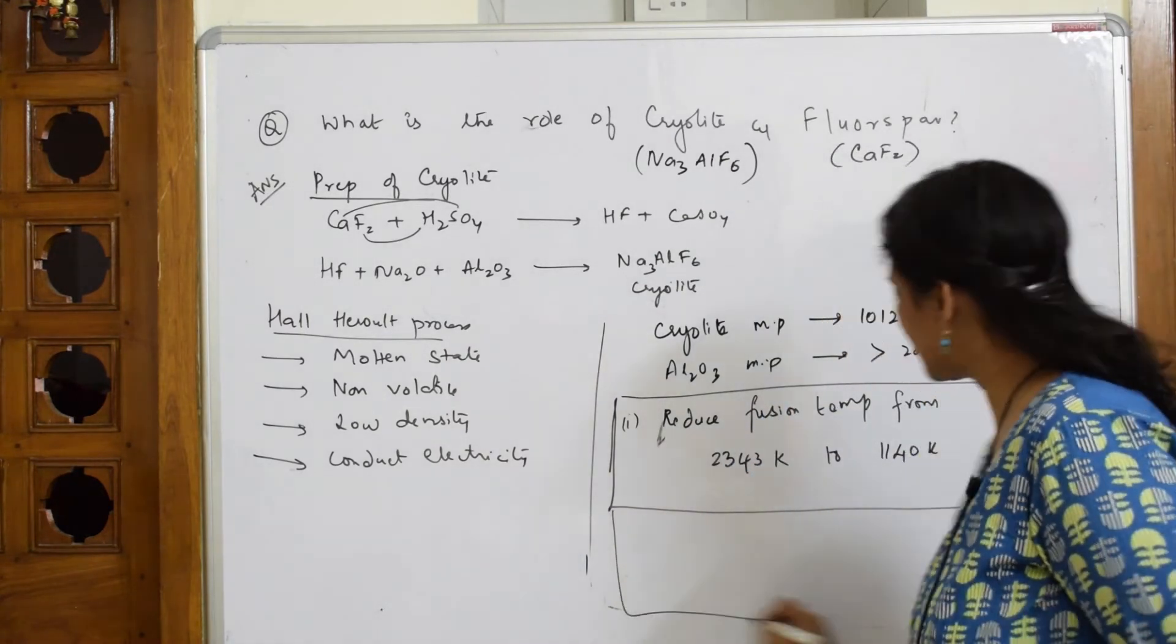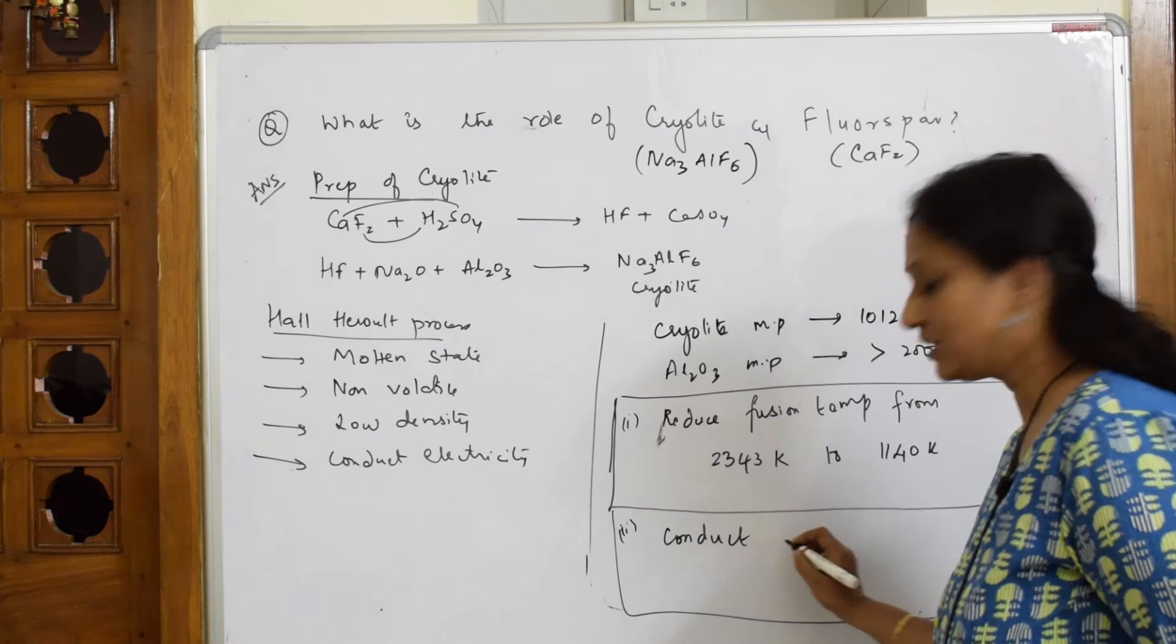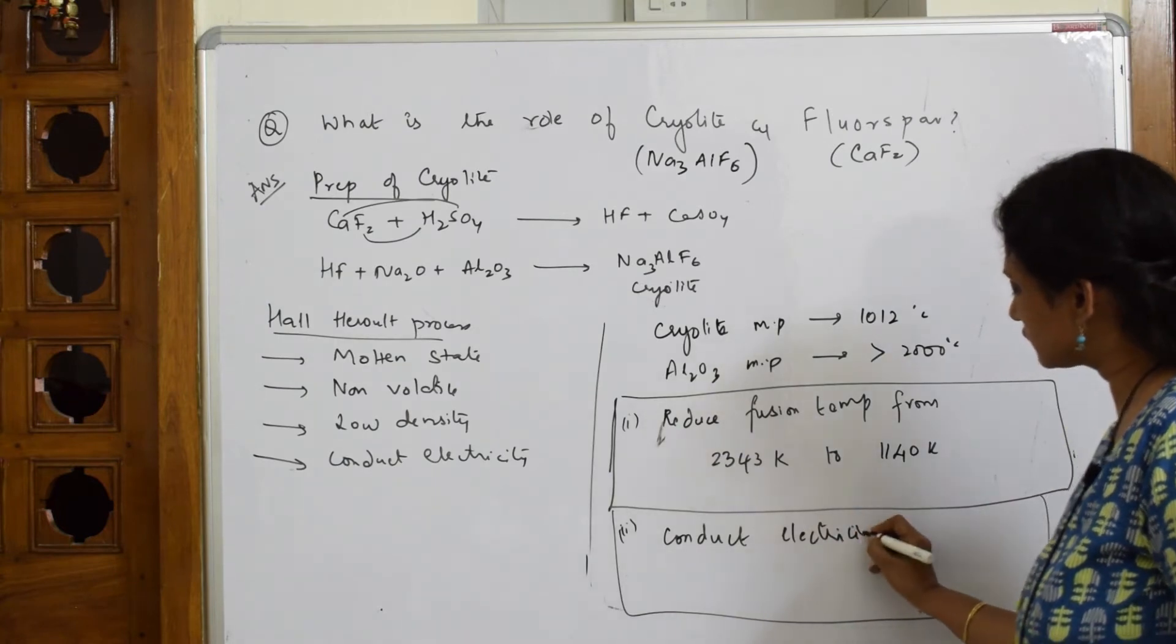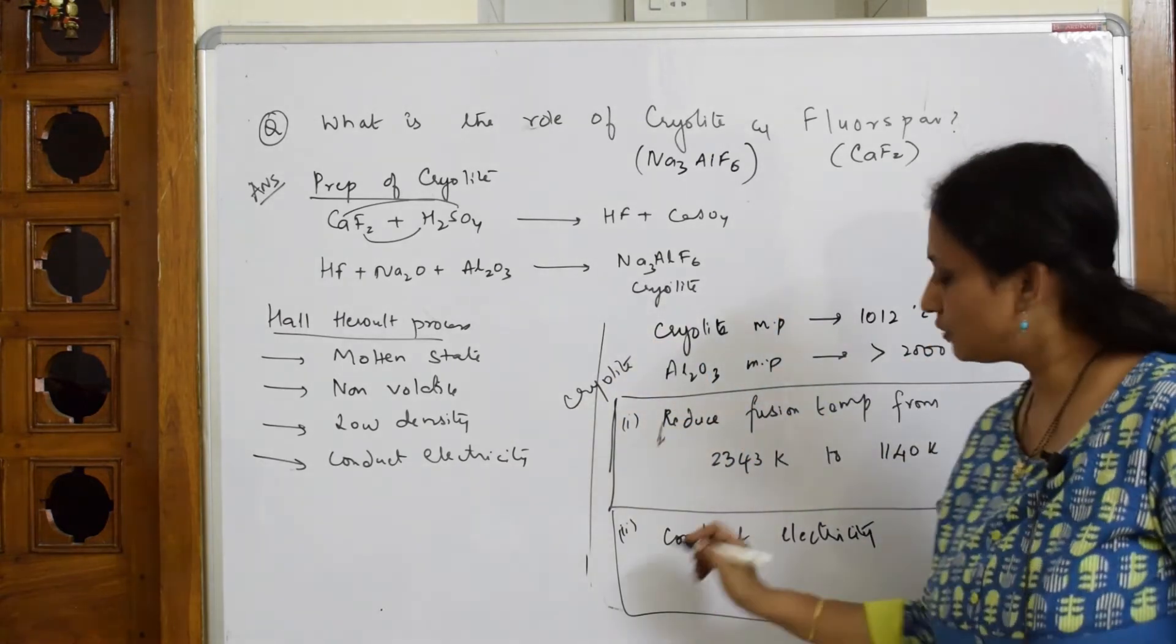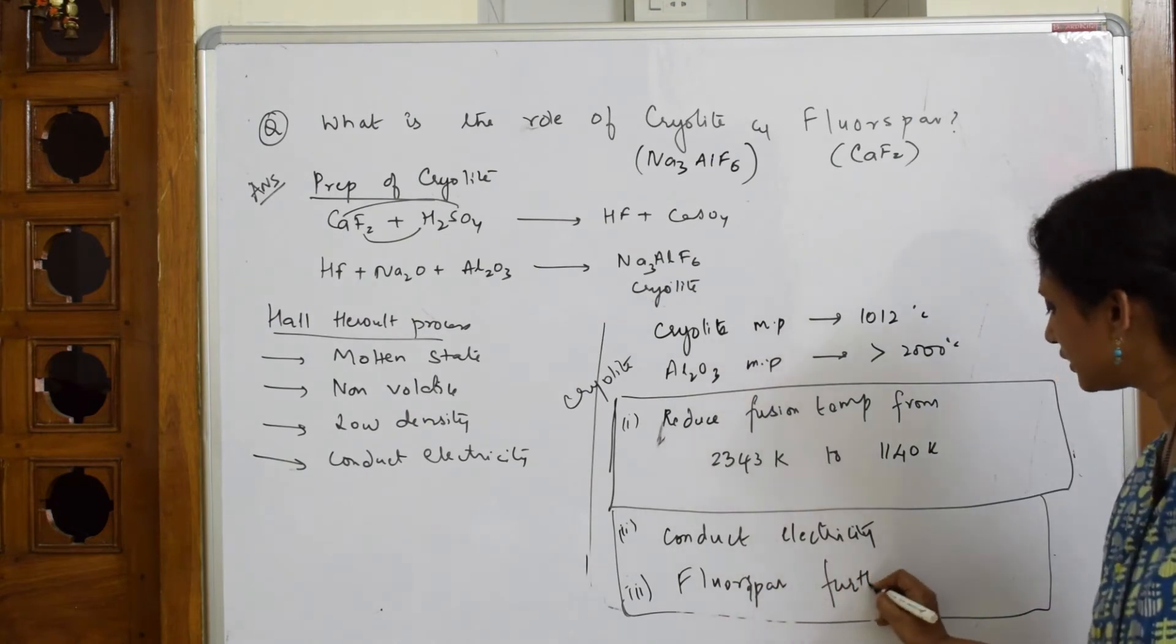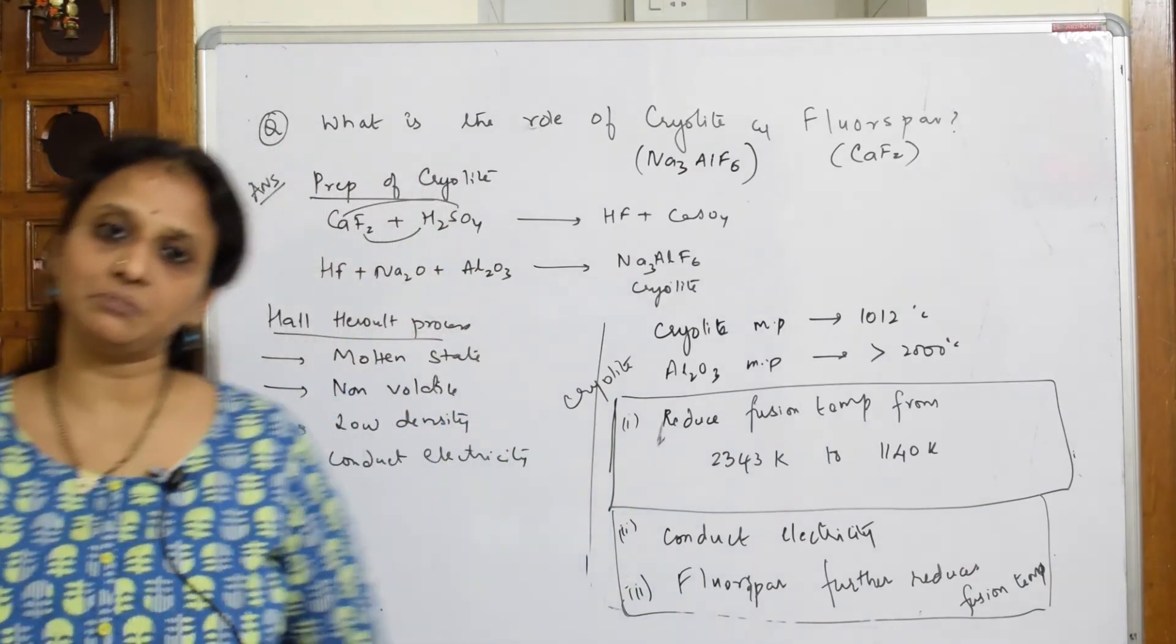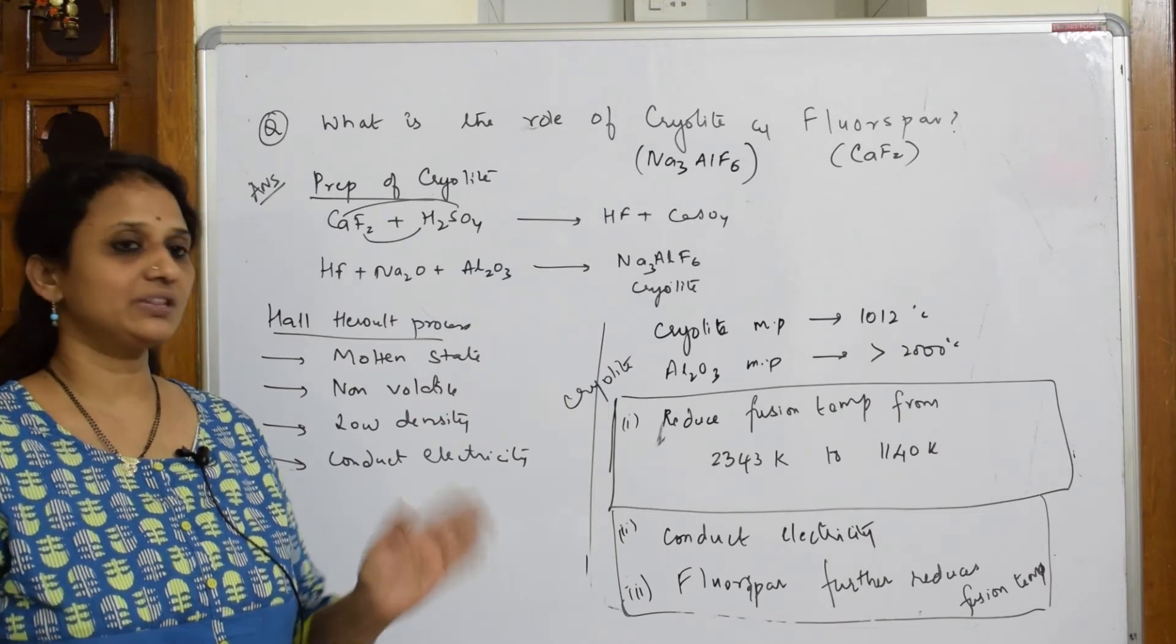The next important thing cryolite is going to help, it will conduct electricity. We have already seen the cell reactions in Hall-Heroult process. So it conducts electricity. This is also one of the important functions of cryolite. Now, what is the use of fluorspar? Fluorspar also further reduces the fusion temperature. These are the two important applications: reducing the fusion temperature so that the metal does not melt and further conducting electricity in the cell so that there is exchange of electrons between the anode and the cathode.